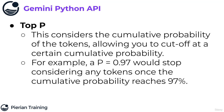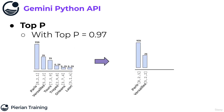Now what about top P? Top P considers the cumulative probability of the tokens — basically where you add up the probabilities from most likely to least likely — and allows you to cut off at a certain cumulative probability. For example, if you set P equal to 0.97, that would stop considering any tokens once the cumulative probability reaches 97%. From our original probability distribution, if we only consider Paris and Versailles, that hits the 97% threshold — adding 95% to 2%. If you use 98% as your top P, you would also add in the next token. So top P limits tokens via cumulative probability, versus top K which uses an integer count of tokens to consider.